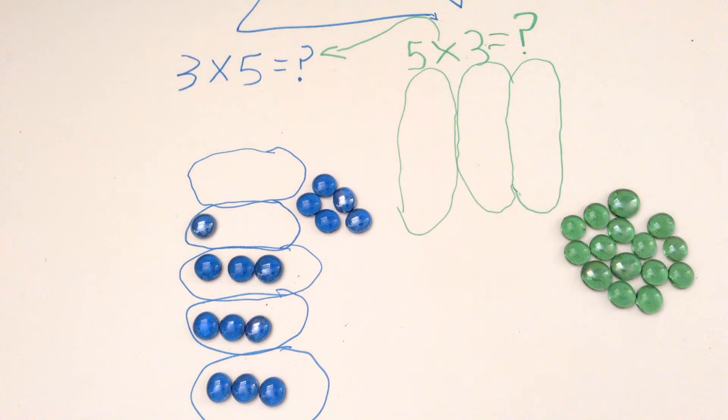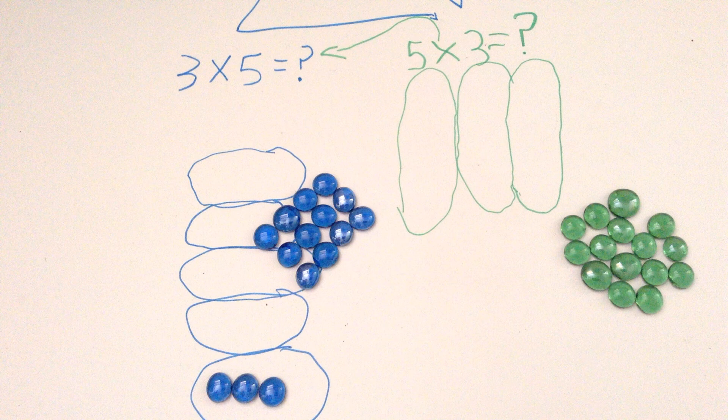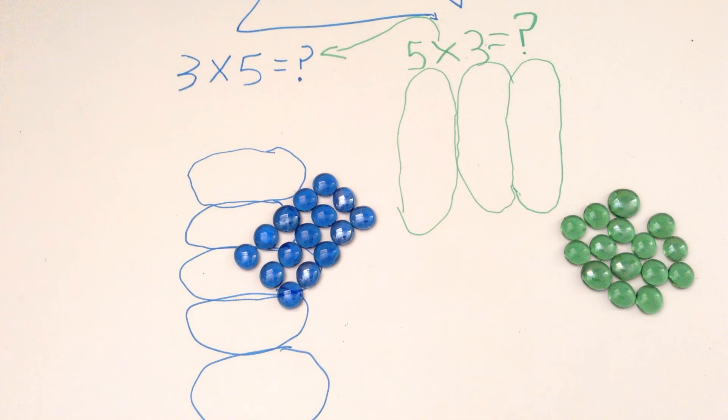One, two, three, four, five, six, seven, eight, nine, ten, eleven, twelve, thirteen, fourteen, fifteen. It equals fifteen.